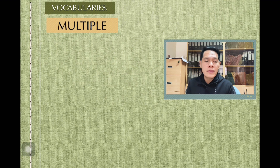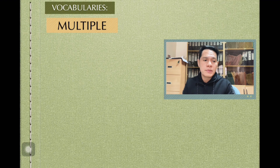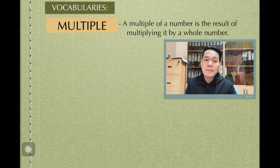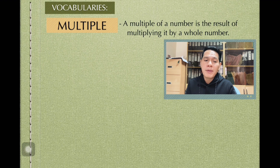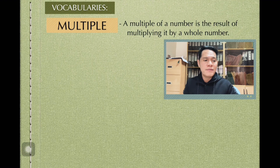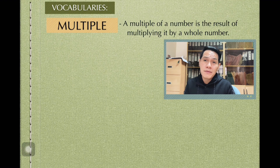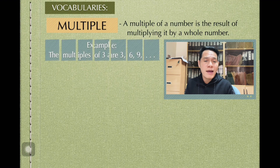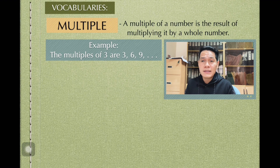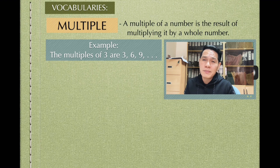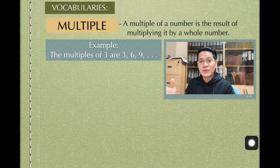Starting with the multiple. When we say multiple, a multiple of a number is the result of multiplying it by a whole number. For example, if you are asked the multiples of 3, then you have 3, 6, 9, 12, and so on and so forth. If you are asked for the multiples of 5, you have 5, 10, 15, and so on and so forth.